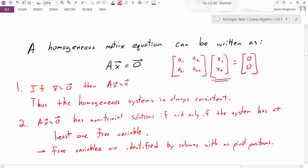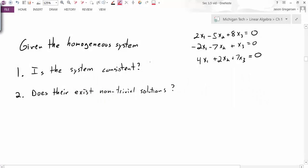So let's take all this information and put it together in an example problem. So let's take a look at this problem. It says given the homogeneous system, notice that the right hand side of all those equations is equal to 0. We have two questions: Is the system consistent? And does there exist non-trivial solutions?